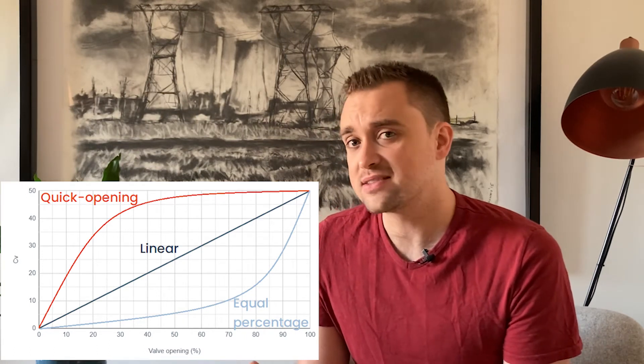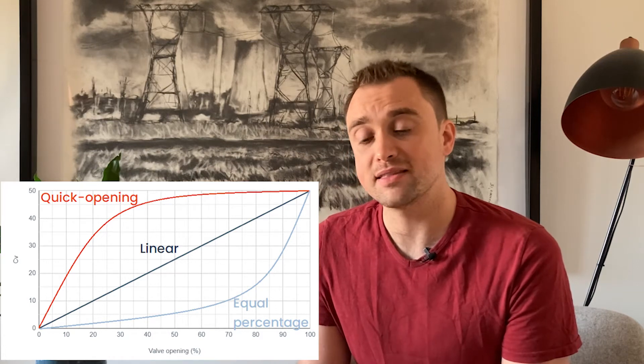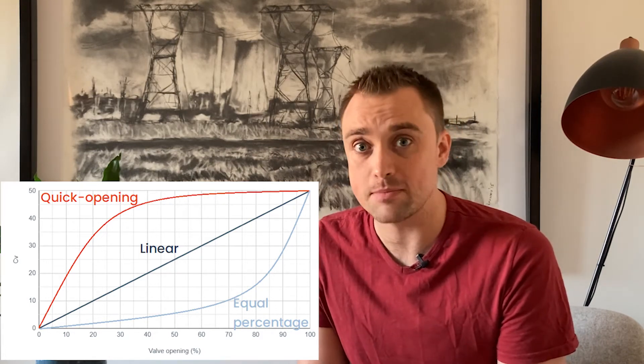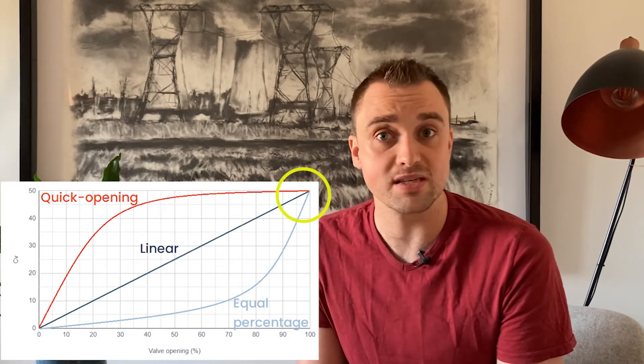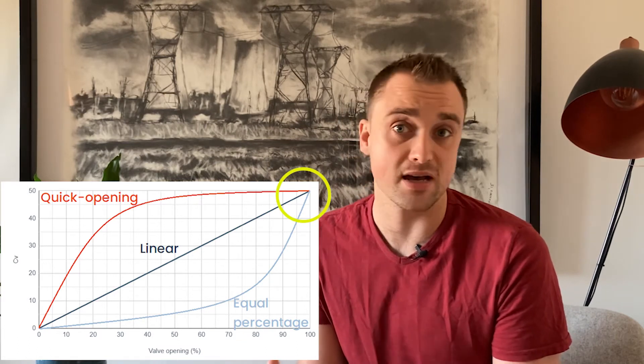What that's trying to tell you is that despite the fact that three different valves may have the exact same CV—when we talk about CV we're talking about the valve when it is 100% open—the paths they take in getting to that CV at 100% vary.